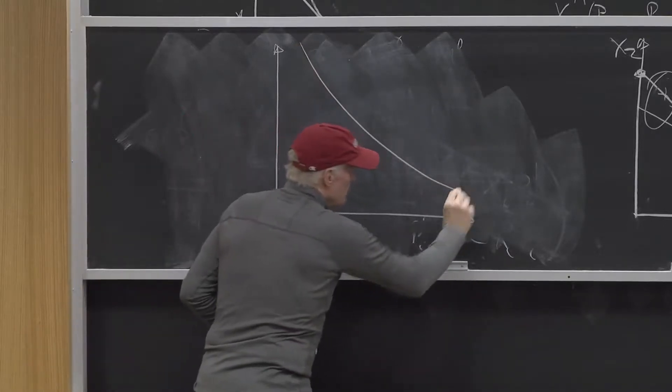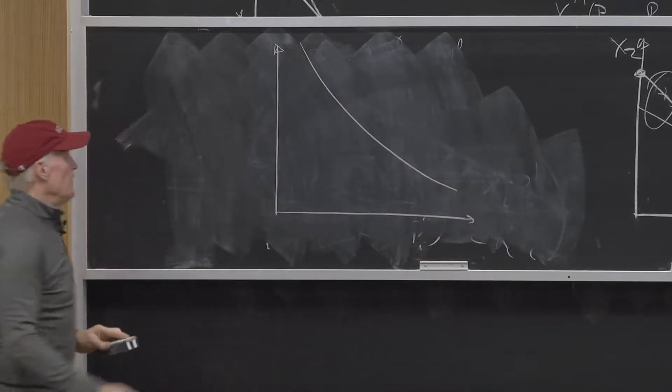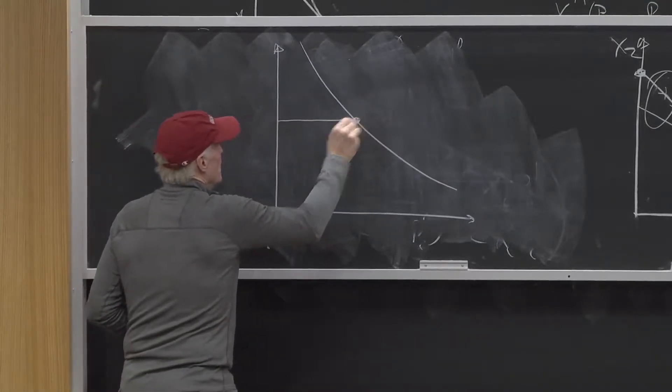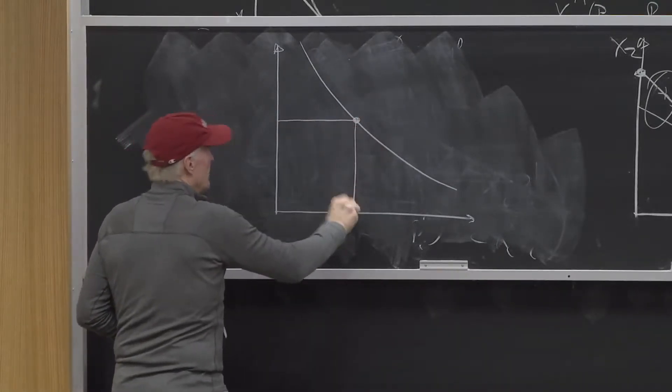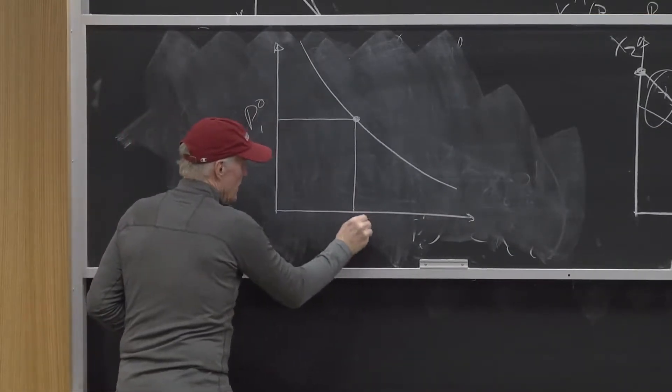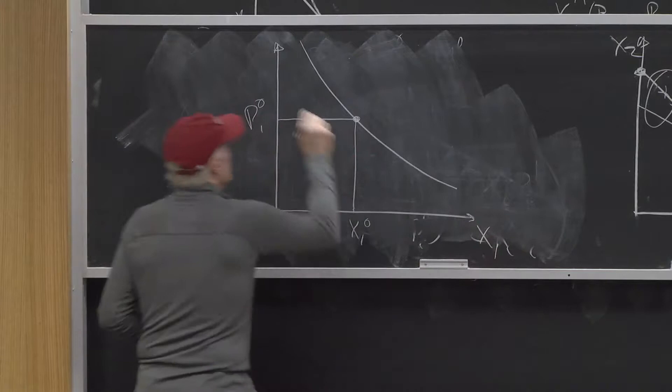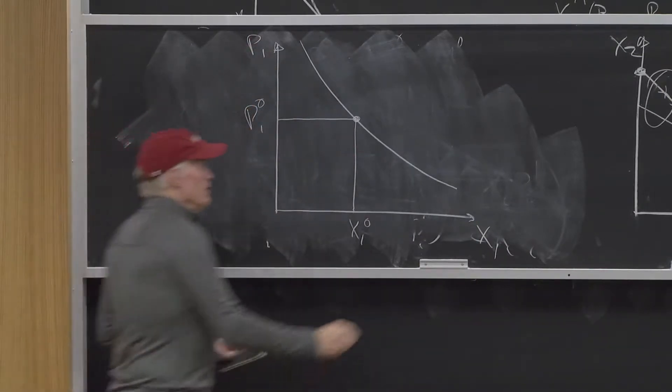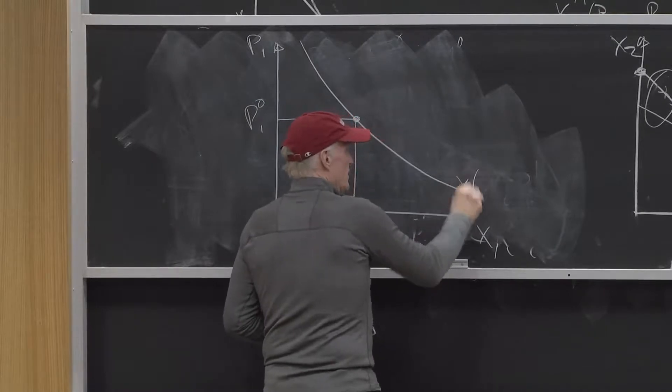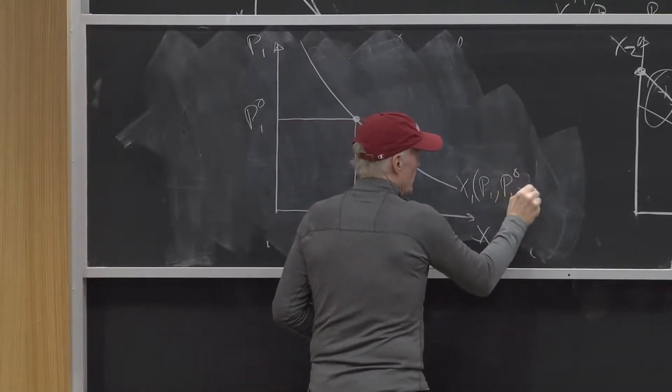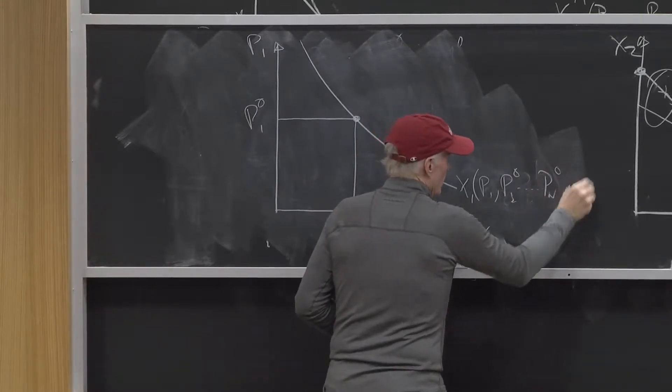Here's my demand curve, and here's the price of good one, P1 naught, X1 naught, here's X1, here's P1. So that's the price of good one. This is X1 of P1, P2 naught, up to Pn naught, M naught.